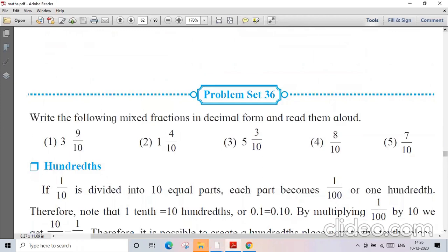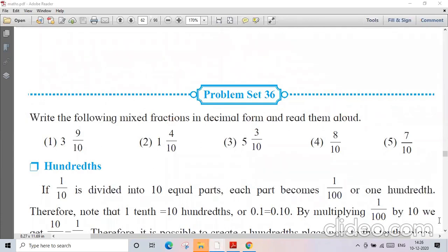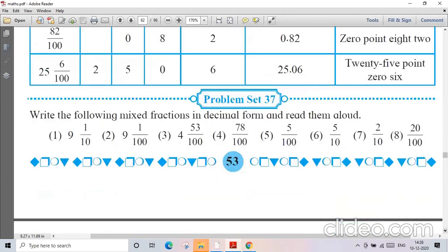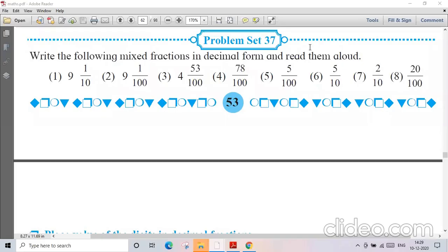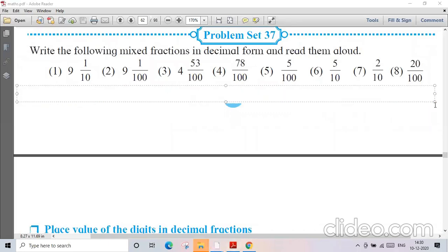Let's see guys, we'll solve Problem Sets 36 and 37. Question number 1: the answer is 9.1. Let's write this as 9.1. Second number is 9.01. Third one will be 4.53.